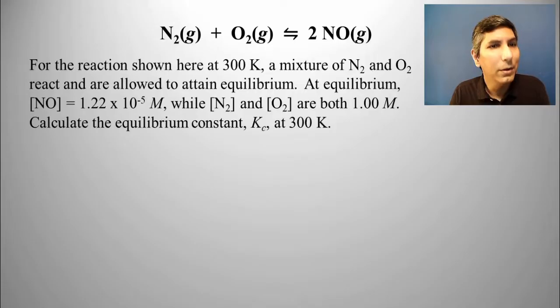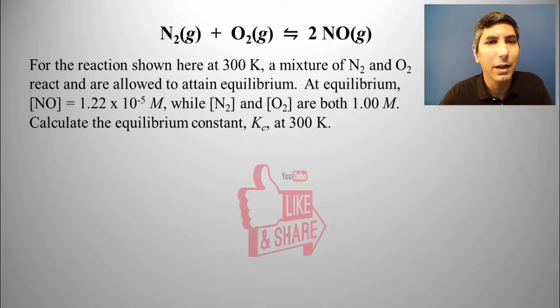At equilibrium, NO equals 1.22 times 10 to the negative fifth molar, while N2 and O2 are both 1.00 molar. Calculate the equilibrium constant, Kc, at 300 kelvins.